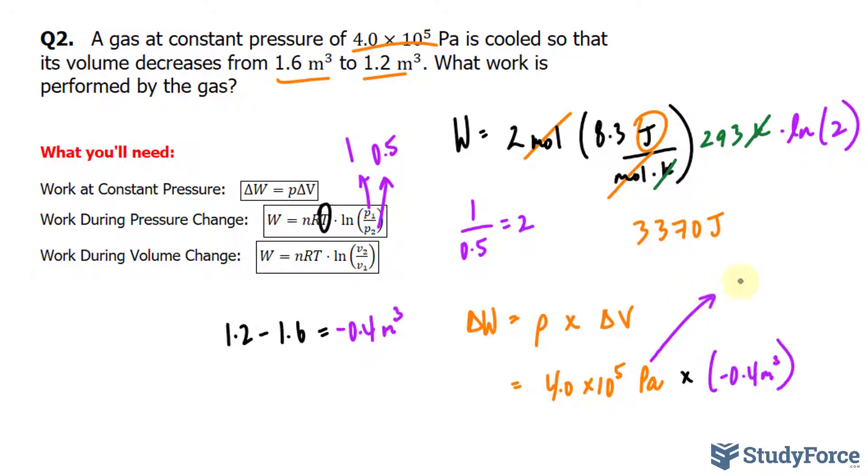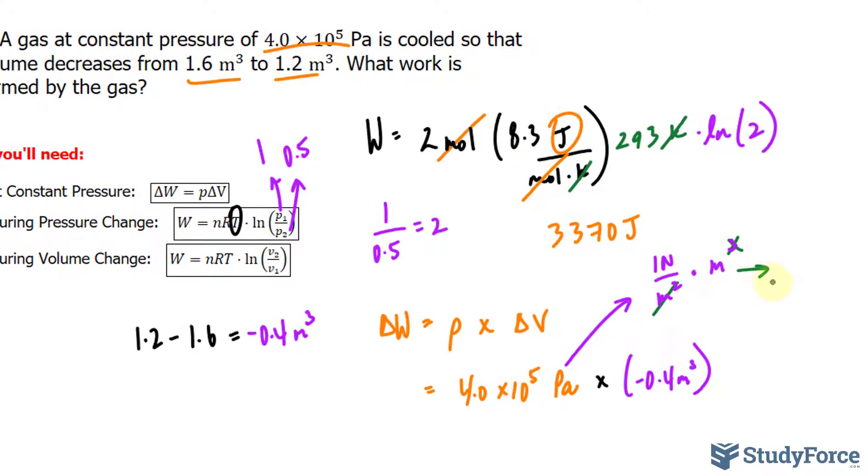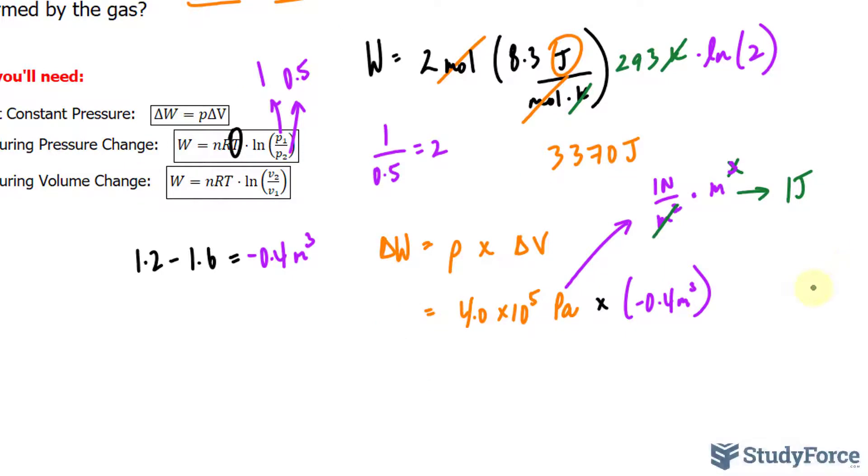Remember, if you break down pascals, it's 1 newton per meters squared. And if we multiply that now to meters cubed, these two will cancel out with two of these, leaving you with 1 newton times meters, and that's equivalent to 1 joule. Remember, work is force times displacement, and that's exactly what happens when you do that calculation.